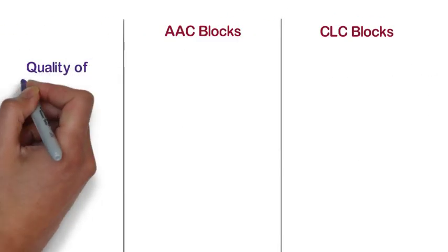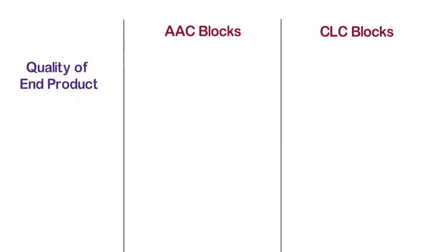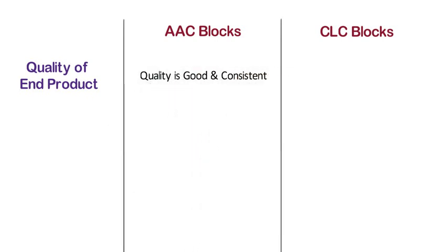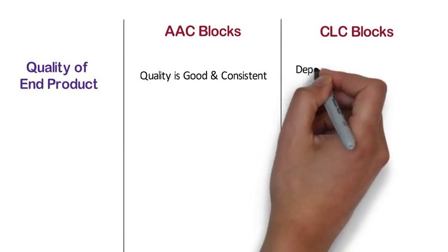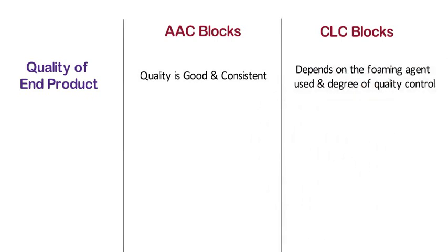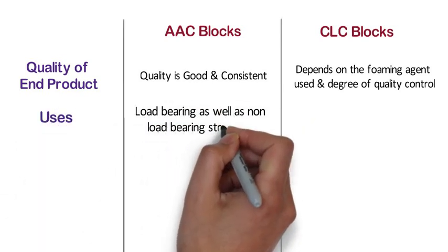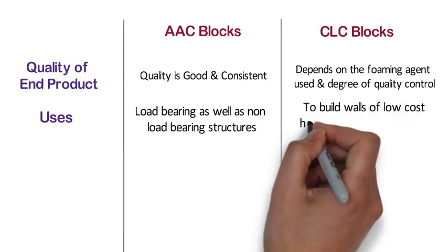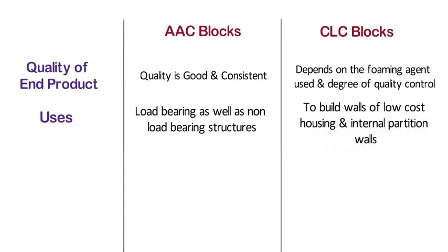Quality of the end product. AAC block is a factory-made product, hence the quality is good and consistent. Whereas, in case of CLC blocks, the quality of the end product depends on the foaming agent used and degree of quality control. Uses. AAC blocks can be used in load bearing as well as non-load bearing structures. Whereas, CLC blocks are used to build walls of low cost housing and internal partition walls.